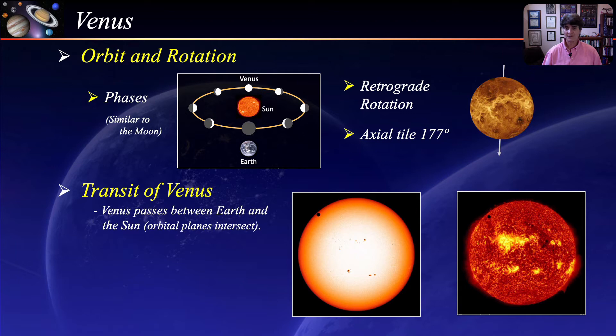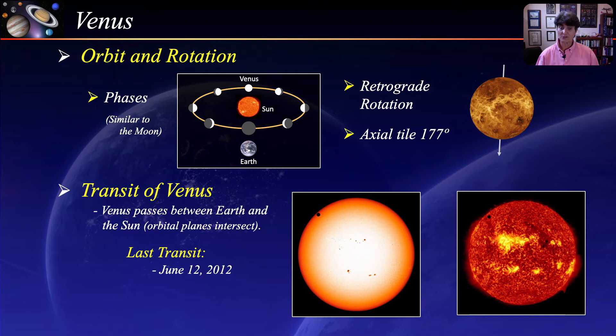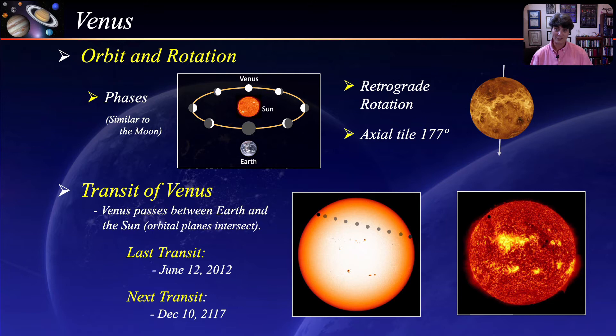During a transit, Venus appears as a small black dot moving across the face of the Sun. The last transit occurred in June of 2012, and the path of the total transit took about six hours. If you did not get a chance to see this event, it is unfortunate, because the next transit will not occur until December 10, 2117.